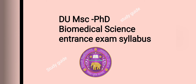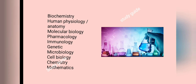After analyzing many papers from previous years, I have found that the topics which are broadly asked are from biochemistry, human physiology and anatomy, molecular biology, pharmacology, immunology, genetics, microbiology, cell biology, chemistry, and mathematics. We can consider this the syllabus for the MSc and PhD Biomedical Science Entrance Exam. Now let's go deeper and understand which specific topics are asked from these broad subjects.